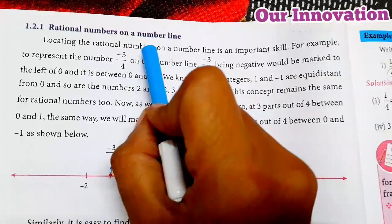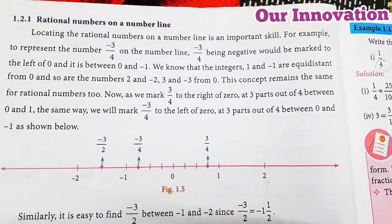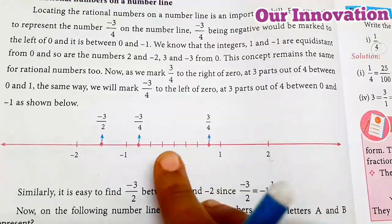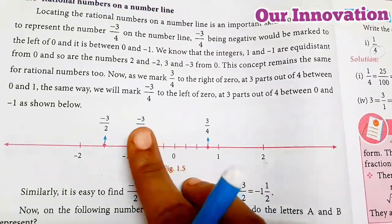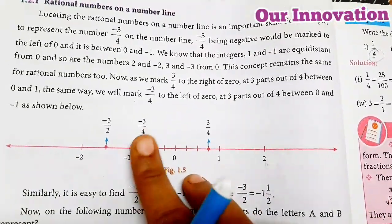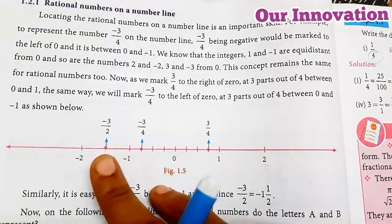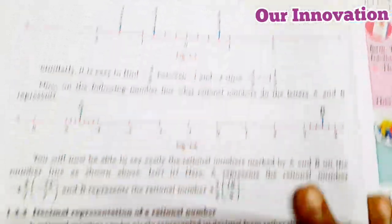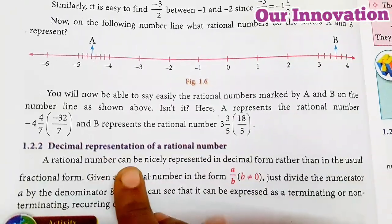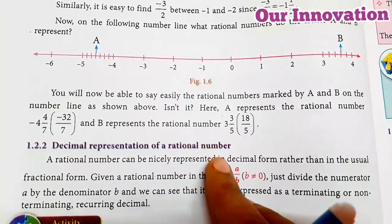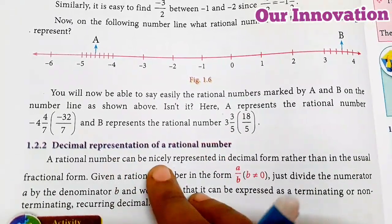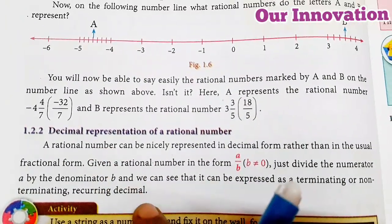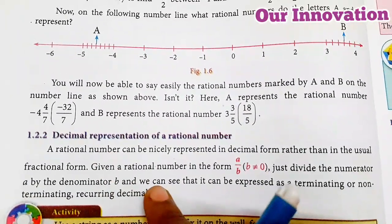The rational numbers on your number line. Next, decimal representation of your rational number. If you represent the decimal, you will get decimal.